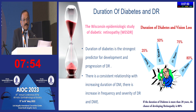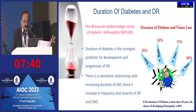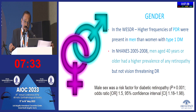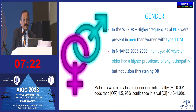Duration of diabetes is the strongest predictor of DR development and progression, as demonstrated by the Wisconsin Epidemiological Study of Diabetic Retinopathy. With diabetes duration greater than 20 years, the chance of developing any retinopathy is 80%, even with good diabetic control. Regarding gender, males have a proportionately higher prevalence of diabetic retinopathy than women.